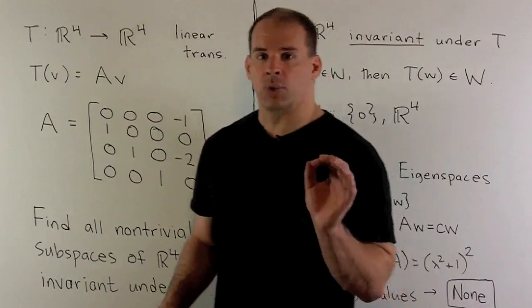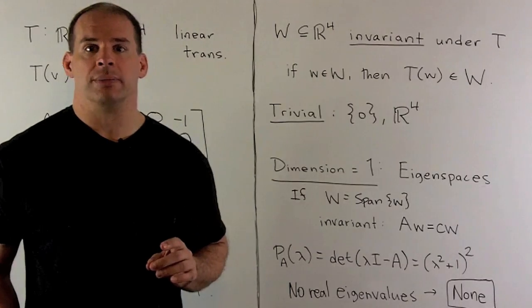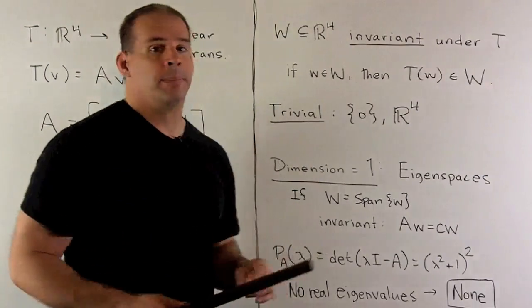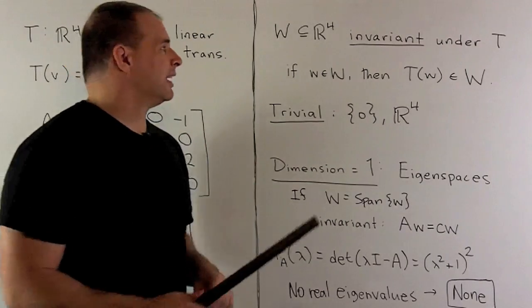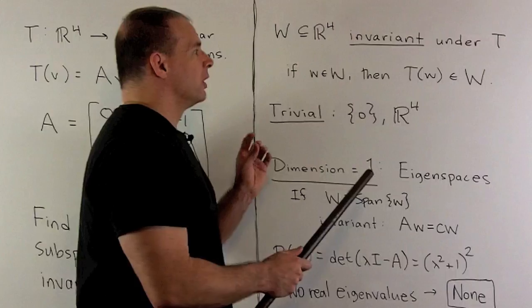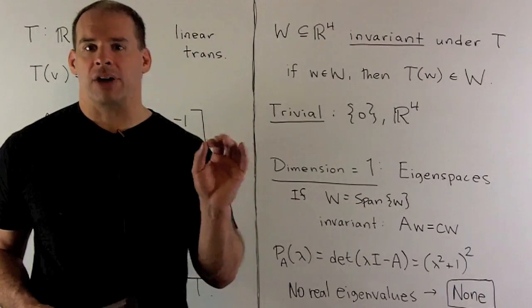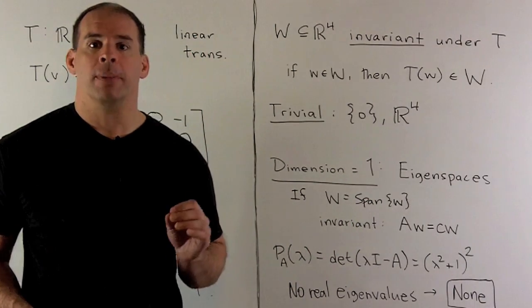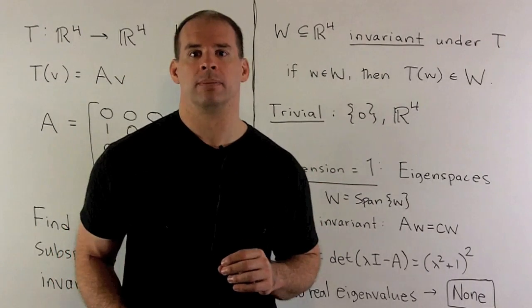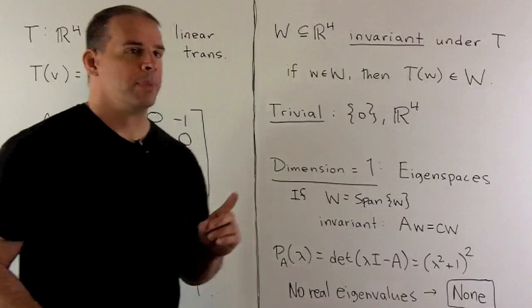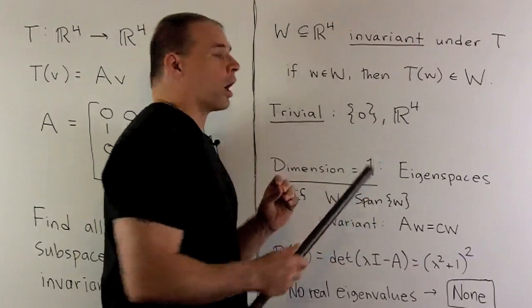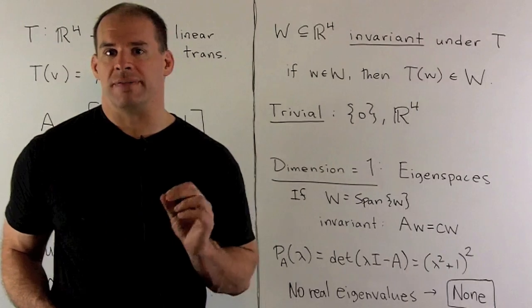Let's recall what we mean by invariant under a linear transformation. We have a subspace W in R⁴. We'll call it invariant under T if, whenever little w is in our subspace, we apply T to little w, we get back another vector in our subspace. Invariant just means T is going to carry your subspace back into itself.